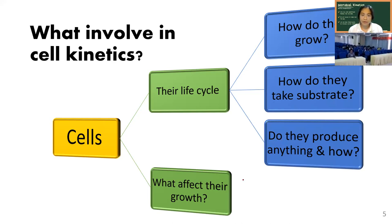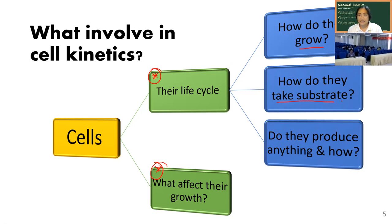Given the time that we have, I'm going to spend a lot of time on what happened during cell growth. When we are talking about cell growth kinetics, we are interested in mainly three things: how the cells grow, how they take the substrate, and what they do with it. And then whether they produce anything and how they produce things. The important part of the cell's life cycle is the use of substrate.